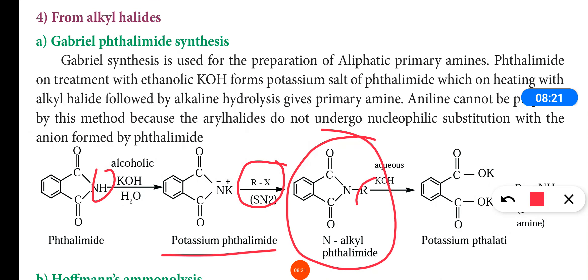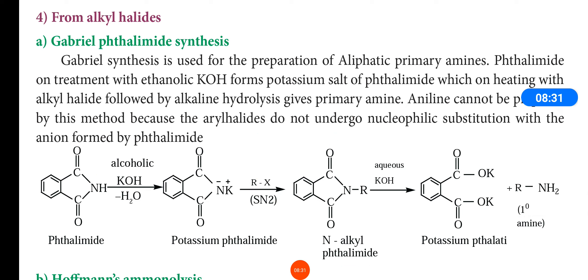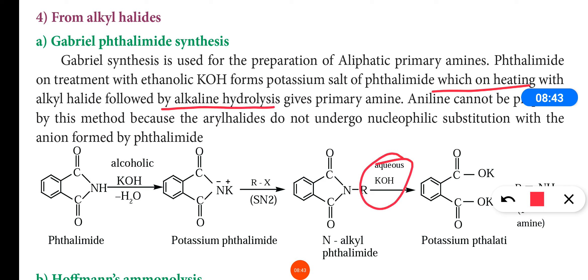N-alkyl phthalimide is heated with alkyl halide followed by alkaline hydrolysis. When hydrolyzed by an alkaline (aqueous KOH solution), it will form a primary amine.